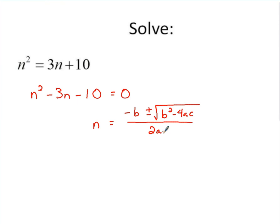Substituting in for a, b, and c. a is going to be 1, b is going to be negative 3, c is going to be negative 10. So substituting in for b here, you've got negative b negative 3, so this is positive 3.